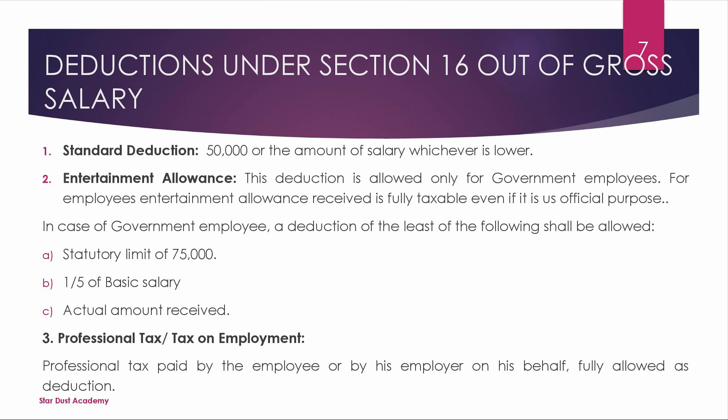When we do the standard deduction, we need to do the minimum. At the end, entertainment allowance for government employees is minus, and professional tax is minus. We will deduct these from the salary to arrive at net taxable salary.